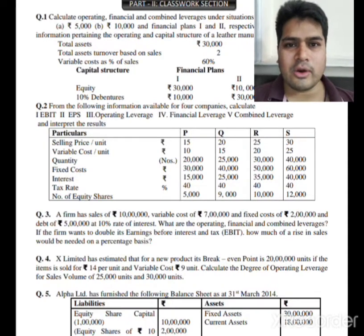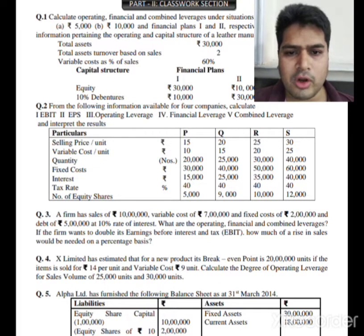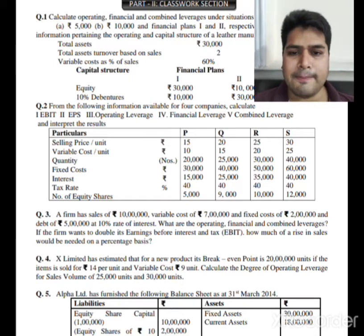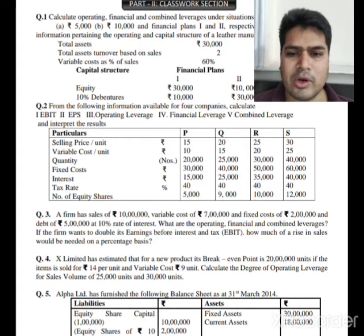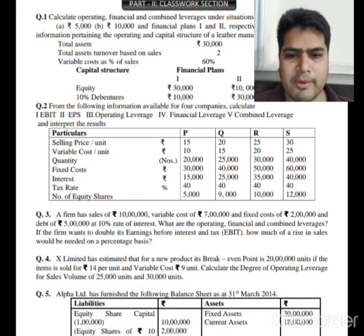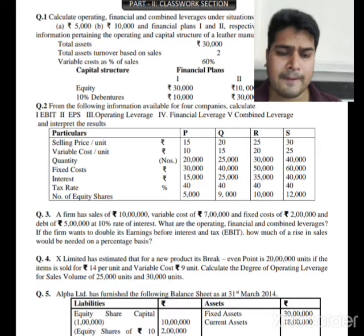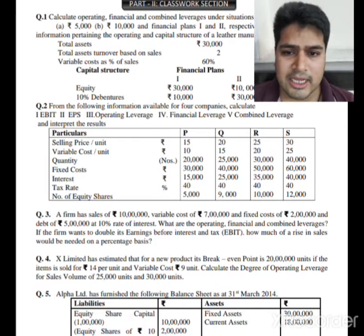Now we are going to see question number 2: from the following information available for 4 companies, calculate EBIT, EPS, operating leverage, financial leverage, combined leverage, and interpret the results. Particulars are given for companies P, Q, R, S — selling price per unit, variable cost per unit, quantities, fixed cost, interest, tax rate, and number of equity shares.